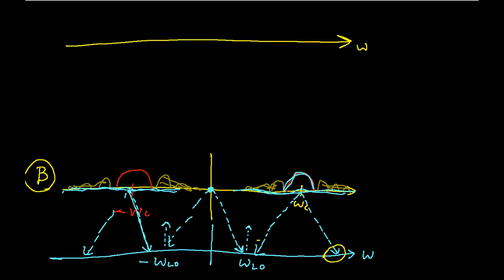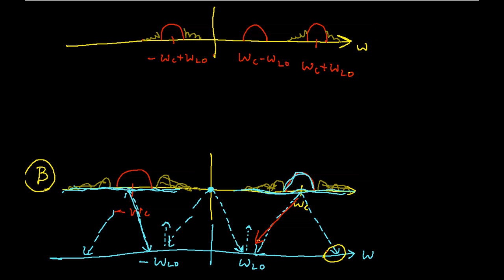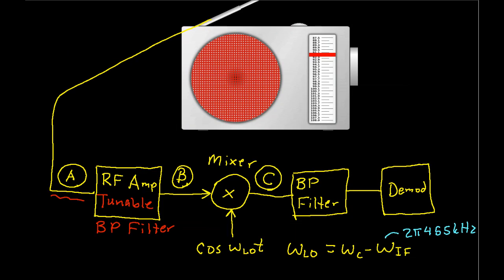When I copy and shift up, I have a copy of the station at ωc plus ωLO and another at minus ωc plus or minus ωLO, and all the garbage from the other stations follows them around. When I copy and shift down, I have a copy of the station at ωc minus ωLO and another at minus ωc minus ωLO, still with all the junk following these. By using the mixer, I have the signal that I want at ωc minus ωLO, which is actually ωIF, and the same thing at minus ωIF. So now I have the signal I'm trying to isolate at this intermediate frequency.